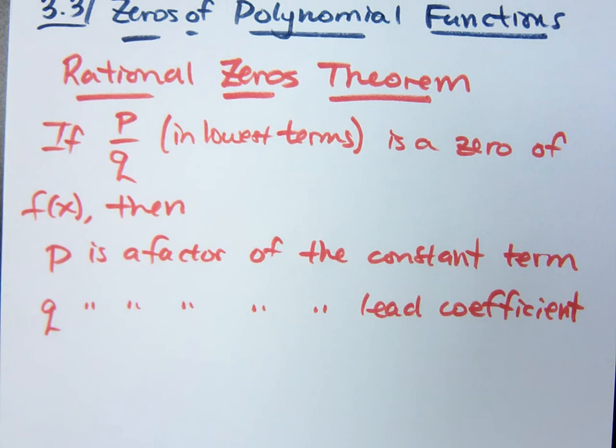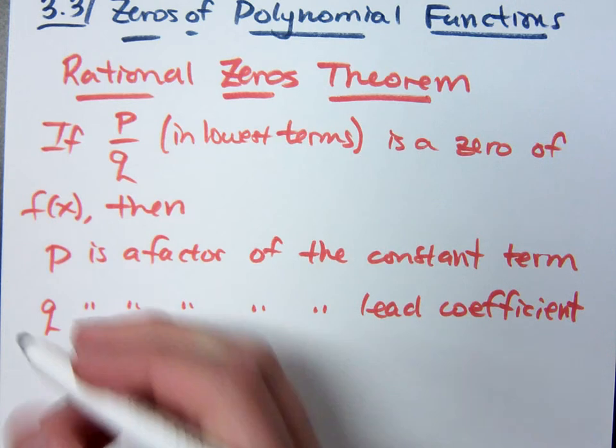P is a factor of the constant term, and Q is a factor of the lead coefficient. You know what I mean by the constant term, right? Do you know what I mean by the lead coefficient? Your lead coefficient is the coefficient of your highest degree term.